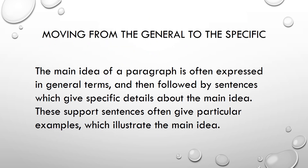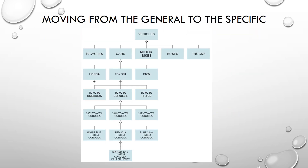Moving from the general to the specific. The main idea of a paragraph is often expressed in general terms, and then followed by sentences which give specific details about the main idea. These support sentences often give particular examples which illustrate the main idea. Have a look at this diagram that illustrates the movement from the most general — vehicles — to the most specific: my red 2019 Toyota Corolla called Henry.